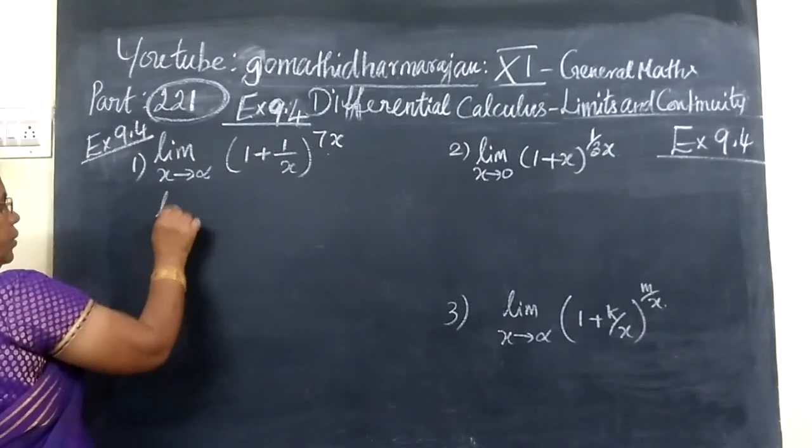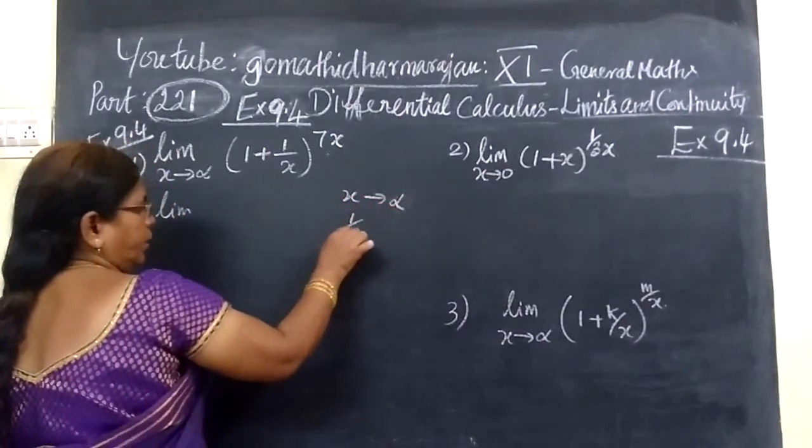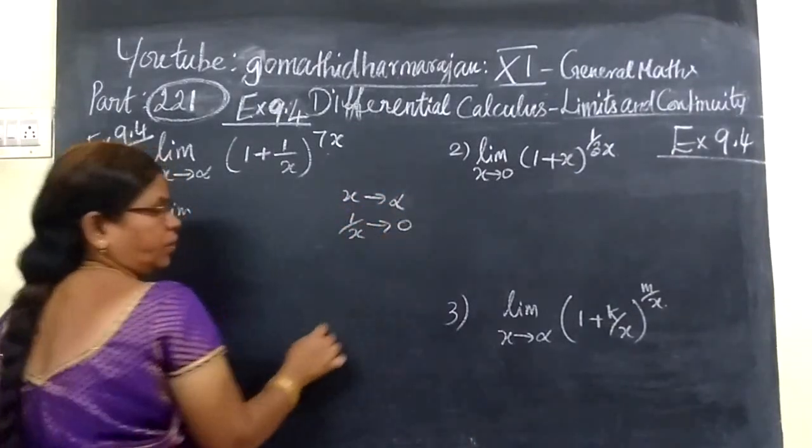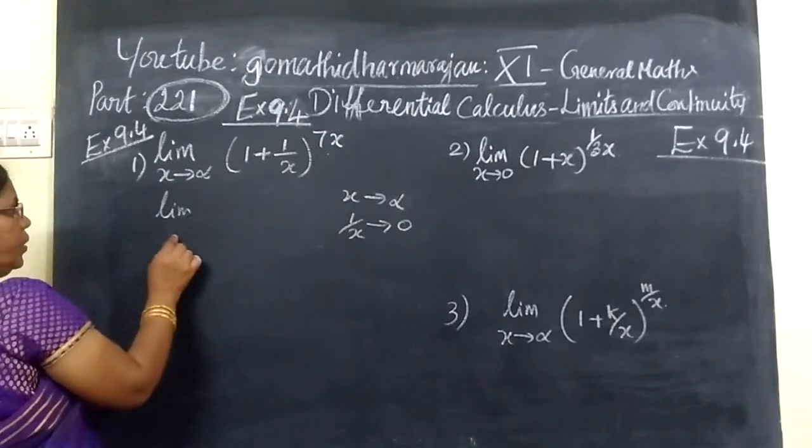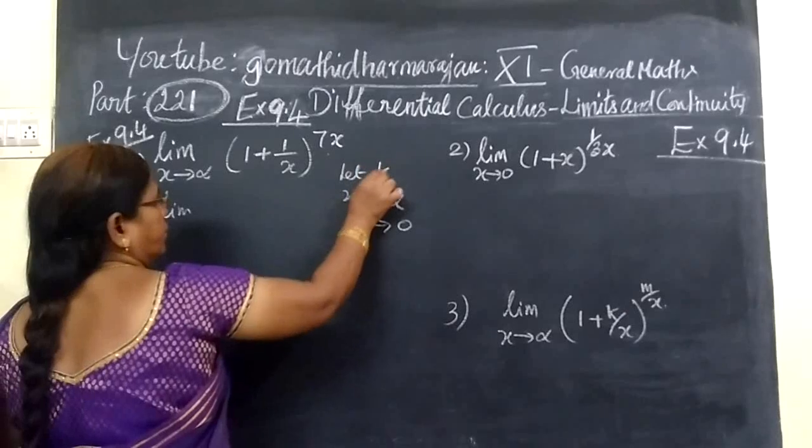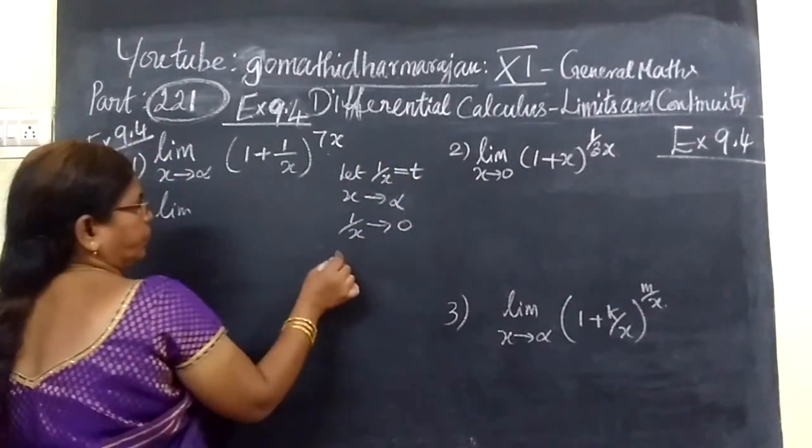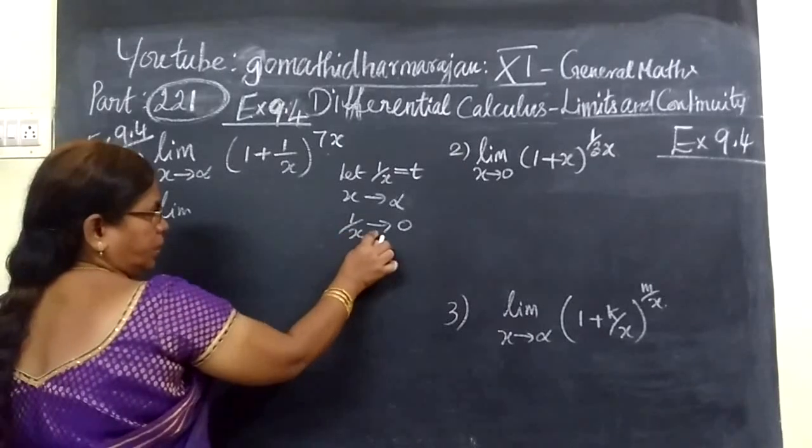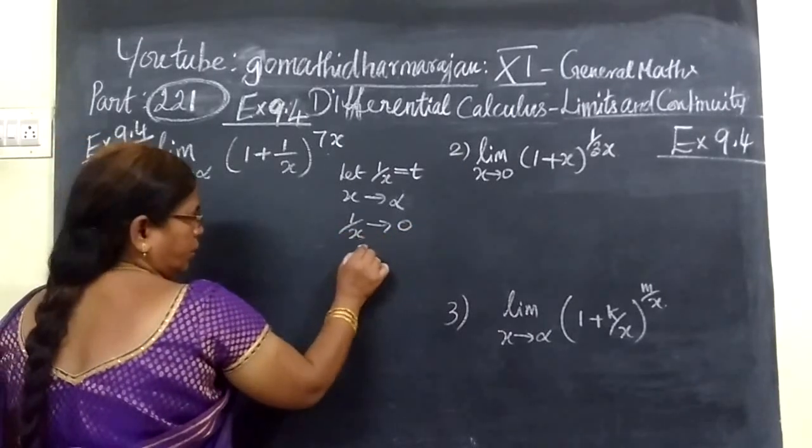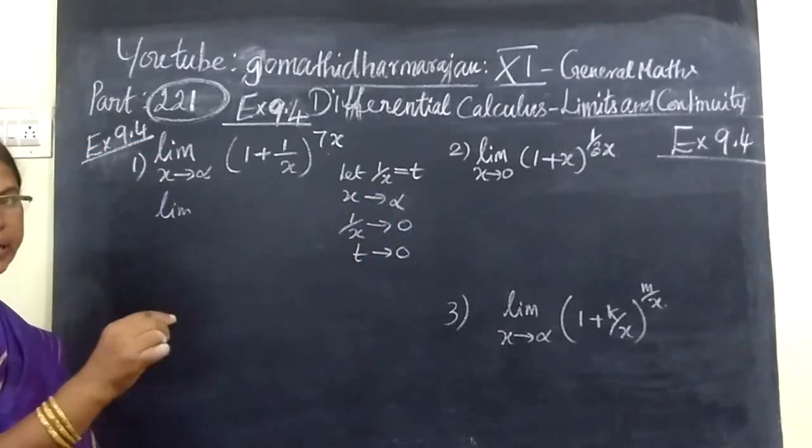We know x tends to infinity means 1 by x tends to 0. So 1 by x equal to infinity means 1 by x tends to 0, which means t tends to 0 because we set 1 by x equal to t.